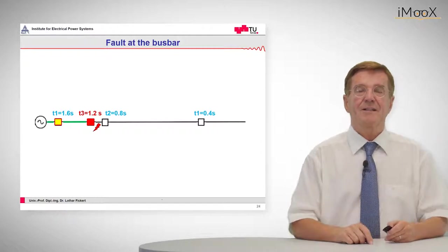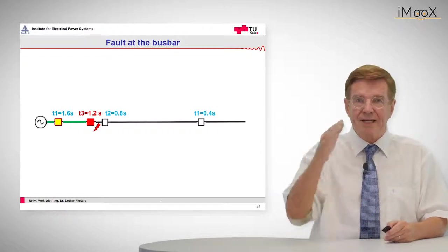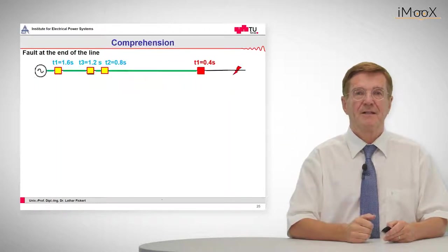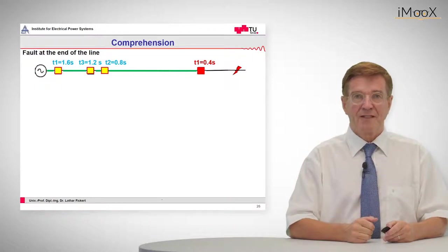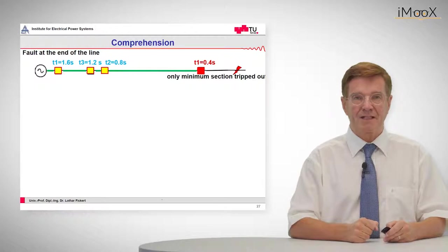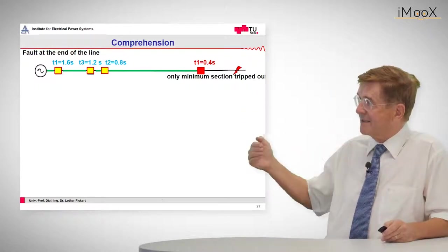Now let's look at the comprehension of these three different fault positions: end of the line, beginning of the line, bus bar. So this was the fault at the end of the line. We see that only the minimum section has tripped out, which is the last section.